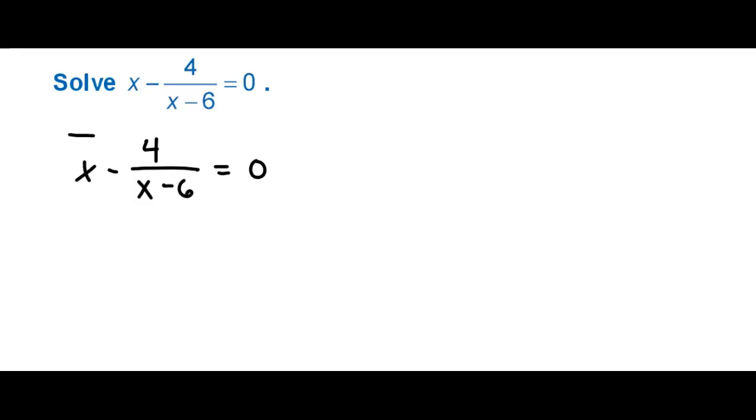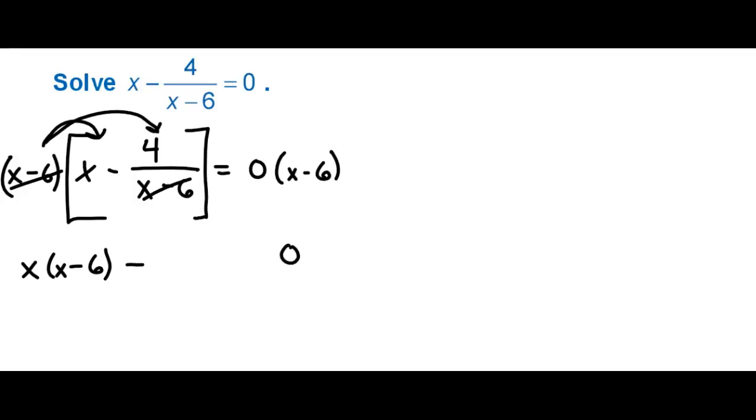So what I'm going to do is I'm going to take the left side times x minus 6 and I'll take the right side times x minus 6. The right side will of course stay 0 and then the left side I'm going to have to distribute that binomial to both terms. So x times x minus 6 is my first term and then my second term the x minus 6 will cancel out on the top and bottom which is what my goal was so I'm just left with 4.